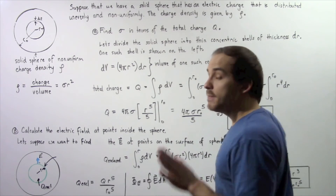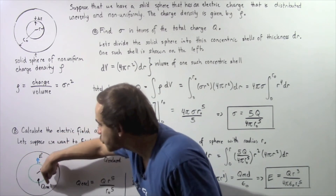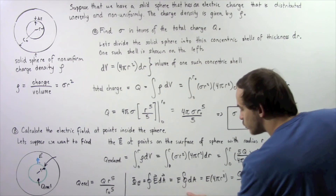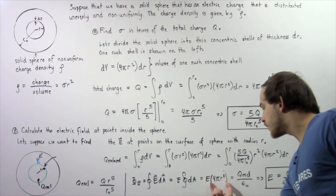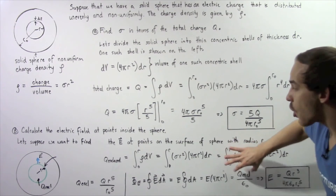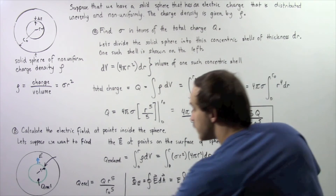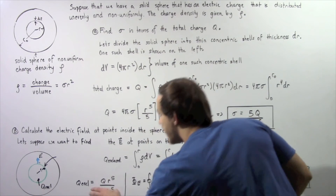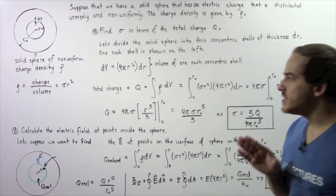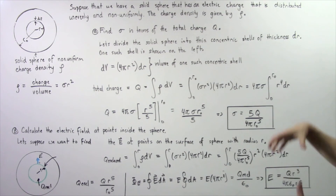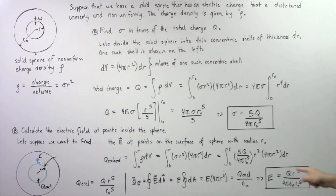Since E is constant over the entire green surface, we pull it out of the integral. Integrating dA gives the surface area 4πr², so we have E times 4πr² equal to q-enclosed divided by epsilon-naught. Substituting q-enclosed equals q times r to the fifth over r-naught to the fifth, and solving for E, the electric field inside the solid sphere of non-uniform charge density equals q times r cubed divided by 4π epsilon-naught times r-naught to the fifth power.